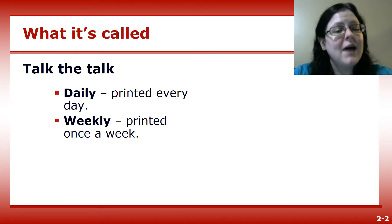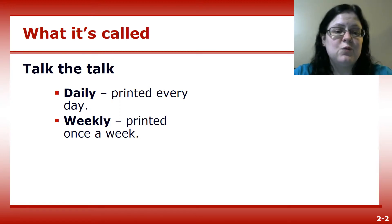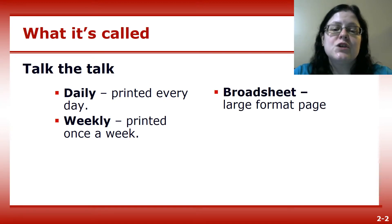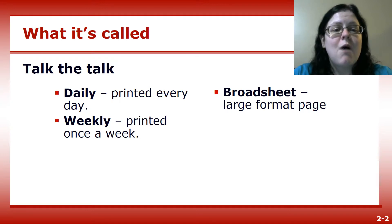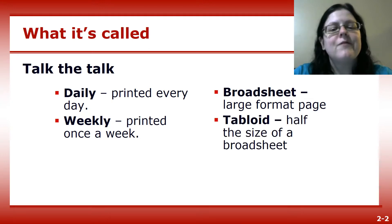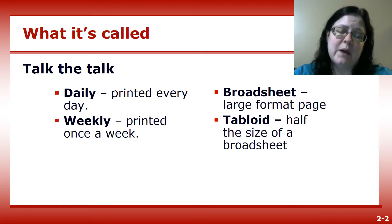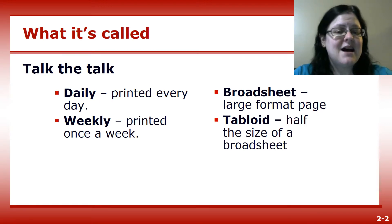You might also have a biweekly that is printed once every two weeks. Next you have a broadsheet. This is a large format newspaper, while a tabloid is roughly half the size of a broadsheet. In this context, a tabloid refers only to the size of the newspaper and not its content.